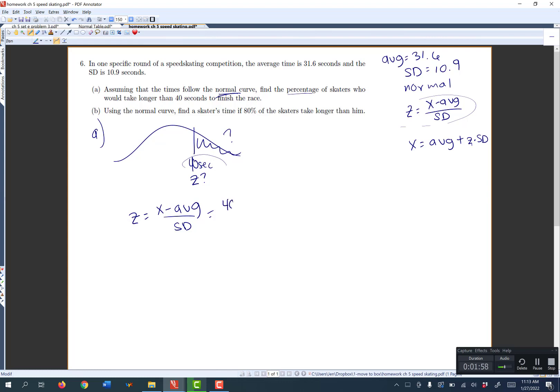So our time x was 40 seconds minus our average of 31.6 divided by our standard deviation of 10.9. Now remember to put this into your calculators, you have to put parentheses around the top. So this gives me 0.77.